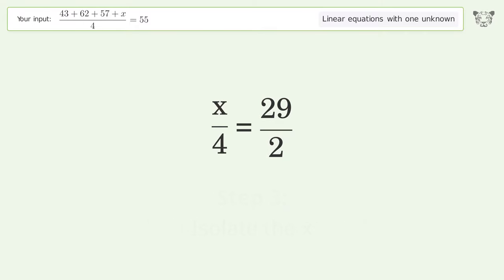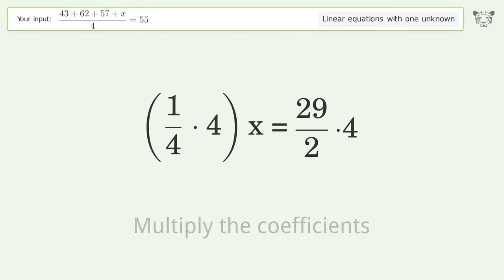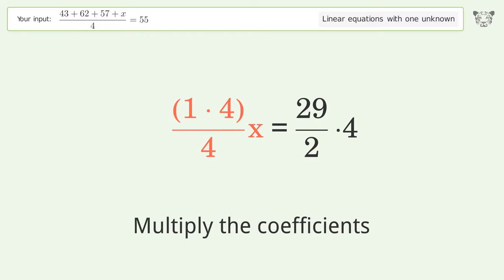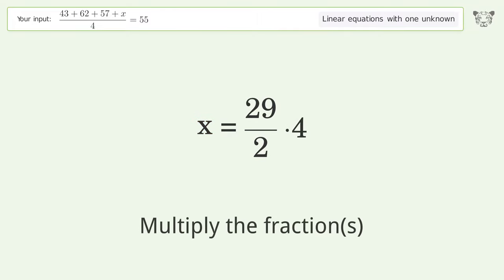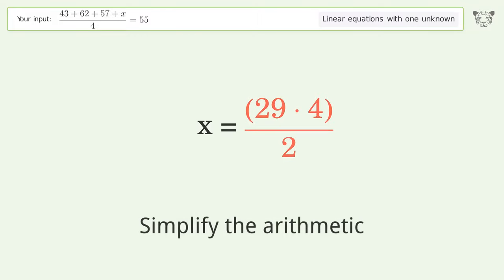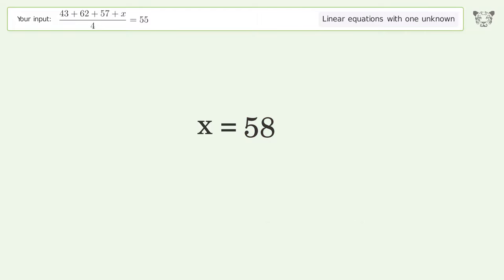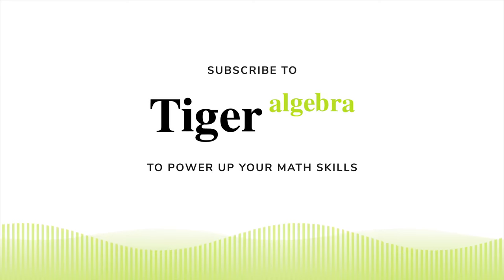Isolate the x. Multiply both sides by 4. Multiply both sides by 4, and so the final result is x equals 58. Thank you.